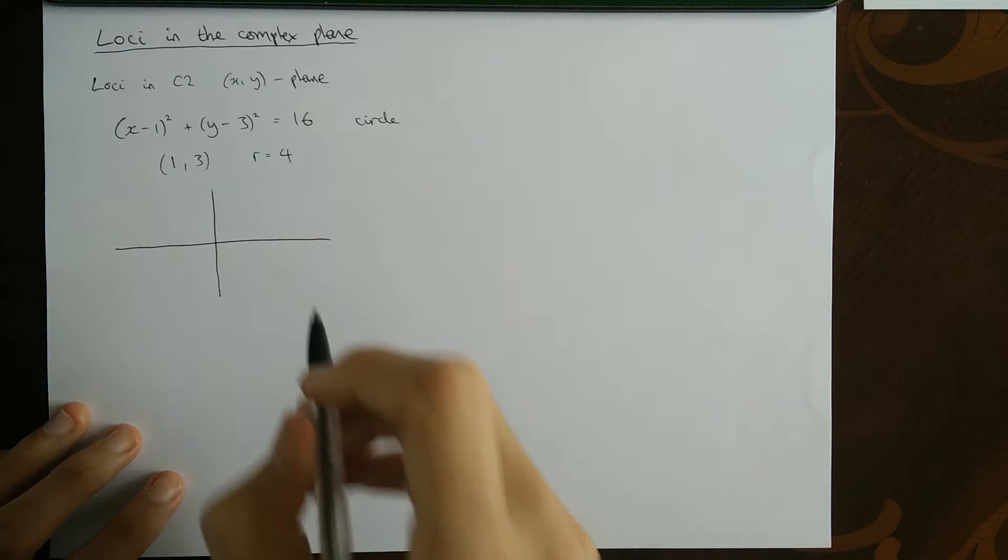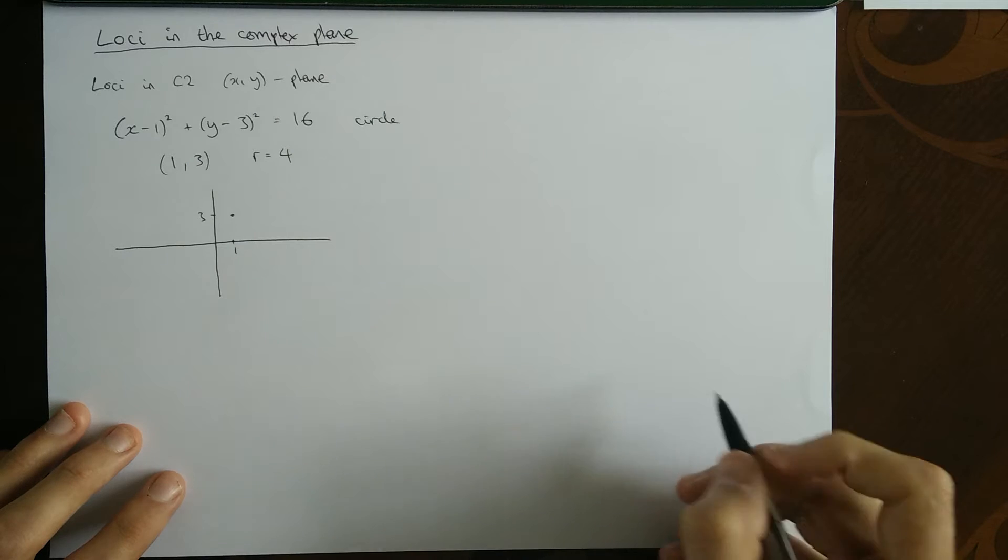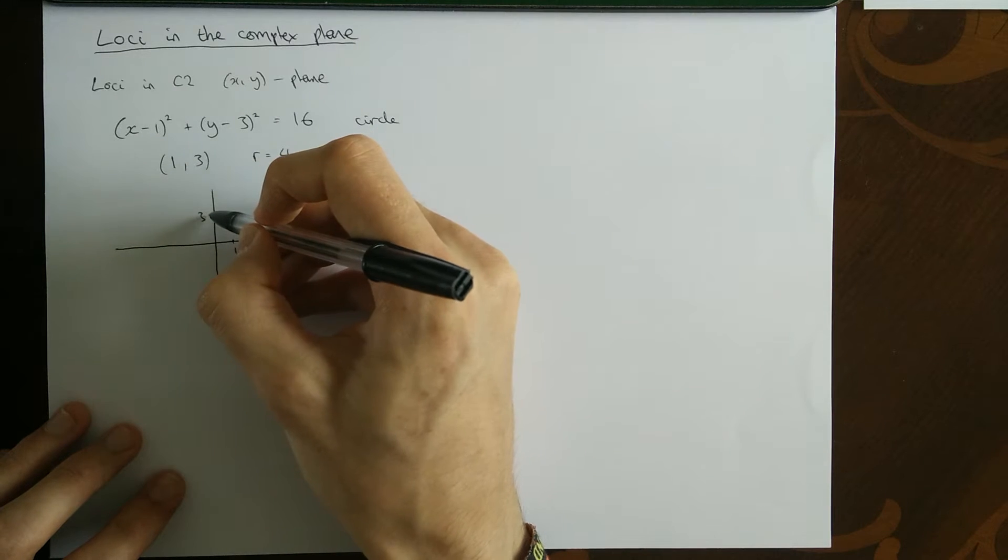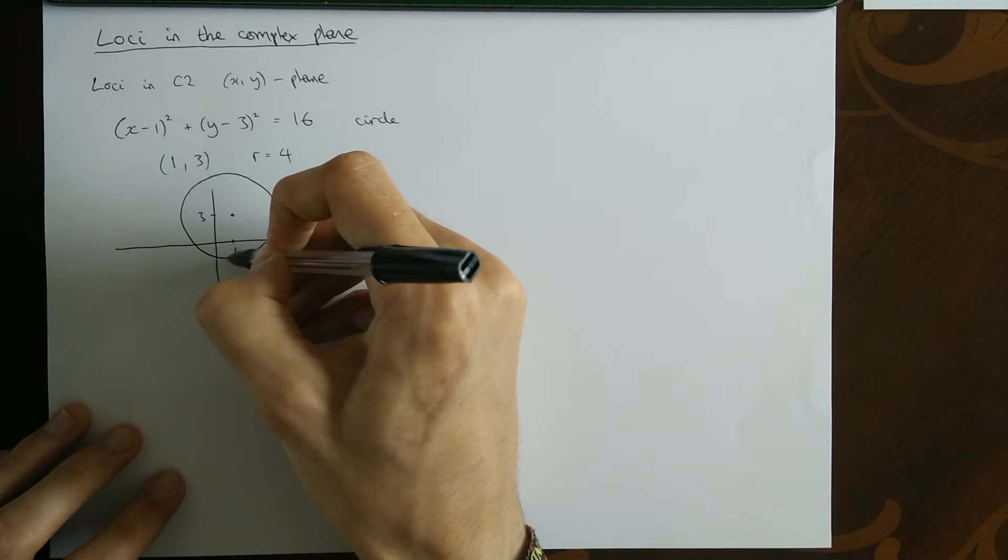We can draw a picture of that. So we'd have centre 1, 3. So there'd be a 1 here, a 3 here. There's our centre at 1, 3. It's got a radius of 4. So 3 take 4 is minus 1, it goes just below this axis around this. Beautiful circle.